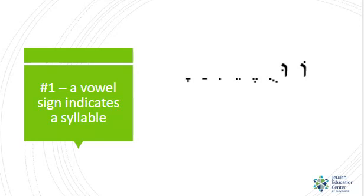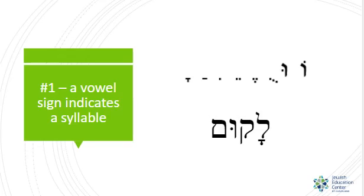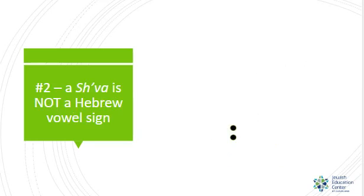There are three rules to know. Number one: a vowel sign indicates a syllable. Everything you see above is a full regular vowel sign — one vowel sign, one syllable. See if you can figure out what dots and dashes are missing from this list. If it's not in this picture, it is not a vowel sign. The word 'lakum' has two vowel signs and therefore has two syllables. The second rule: a sheva is not a vowel sign. It does not denote a syllable. A sheva was originally placed in words to help the reader know not to look for a vowel sign — so this is not a syllable.